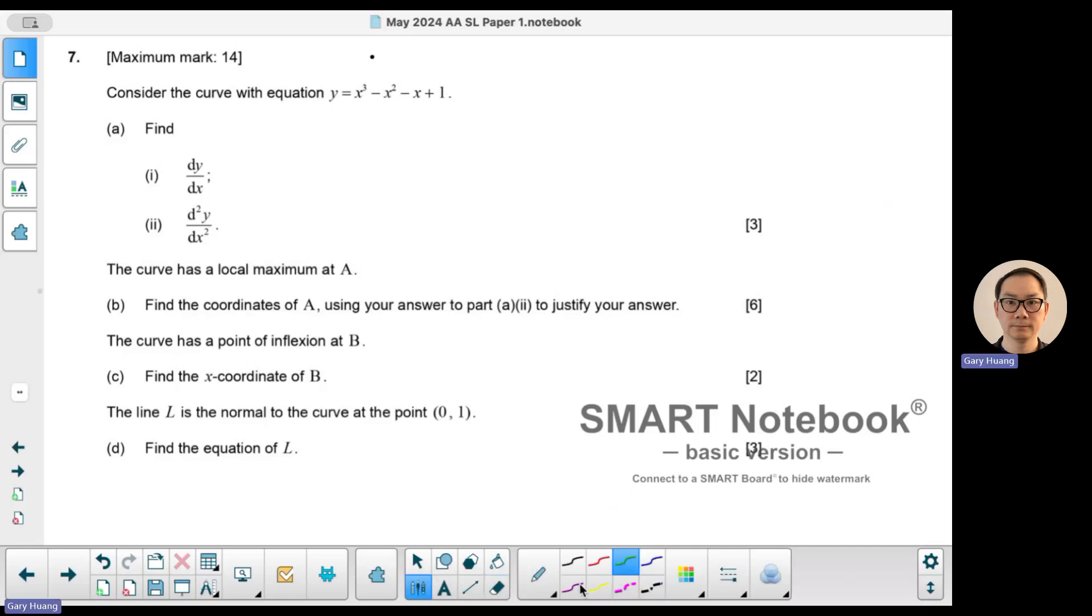As you can see, this question is a derivative question. Part A, you're asked to find the first derivative and then the second derivative. Now you're given a polynomial function, so simple power rule. The first derivative is going to equal 3x² - 2x - 1, and the second derivative is equal to 6x - 2. So that should be 3 easy marks.